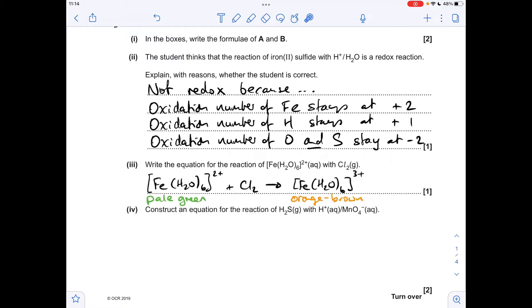So moving on to the next part, we've got to write the equation for the reaction of this pale green FeH2O6 2+ with chlorine. Well, we're told that we get this orange-brown solution, and that's an indication that the iron's been oxidized from +2 oxidation state up to +3. So it's turning into that FeH2O6 3+. So if there's an oxidation process, there needs to be a reduction process. So the chlorine's obviously reduced, and the only thing it can be reduced to is Cl-.